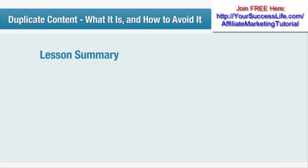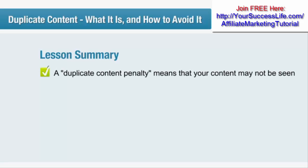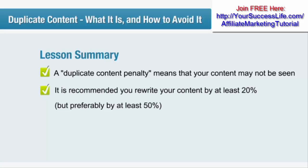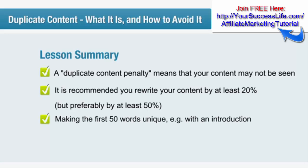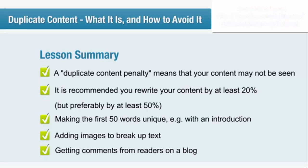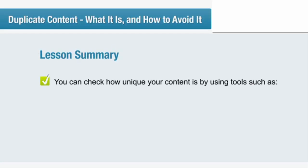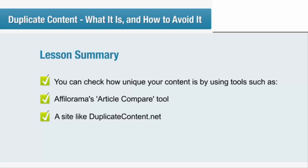And the lesson summary. In this lesson you've learned: a duplicate content penalty means that your content may not be seen. It is recommended that you rewrite your content by at least 20%, or preferably by at least 50%. You can make your content unique in multiple ways, including making the first 50 words unique — for example with an introduction — adding images to break up the text, or getting comments from readers on a blog. You can check how unique your content is by using tools such as the Filorama article compare tool or a site like duplicatecontent.net.